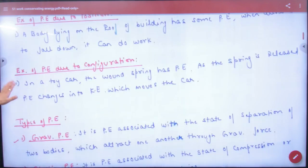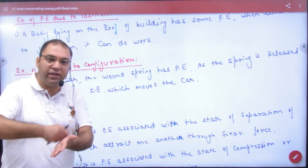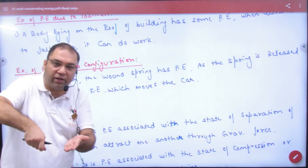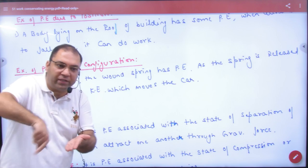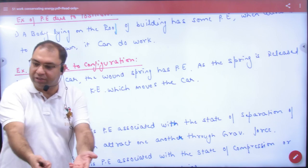Example of potential energy due to configuration: like a toy, a wind-up toy. When we compress the spring, the spring gets compressed. When we release it, the spring returns to normal position and the toy moves. The spring stores energy.